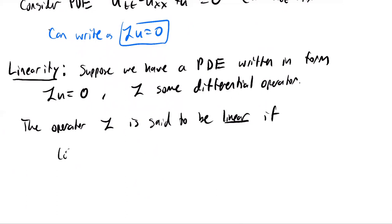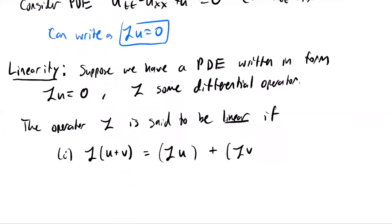Suppose we have a PDE written as L(U) equals zero, where L is some differential operator. The operator L is said to be linear if two conditions hold. The first condition is: if I plug in the sum of two functions, L of U plus V must equal L of U plus L of V. This is the additivity condition.